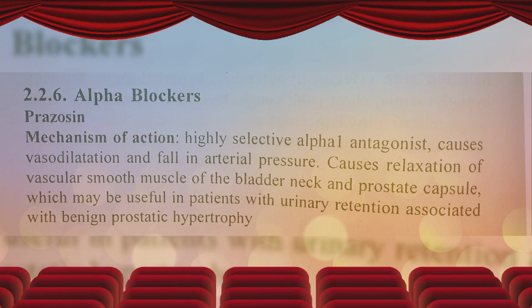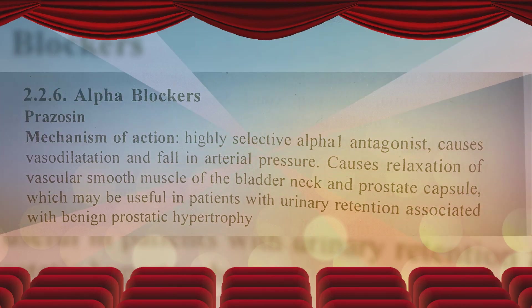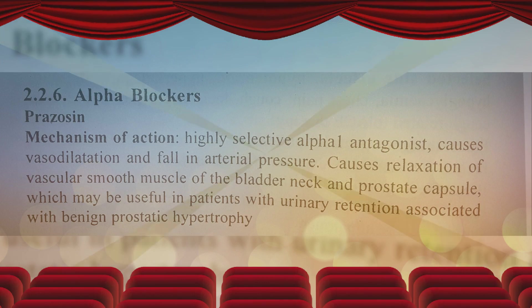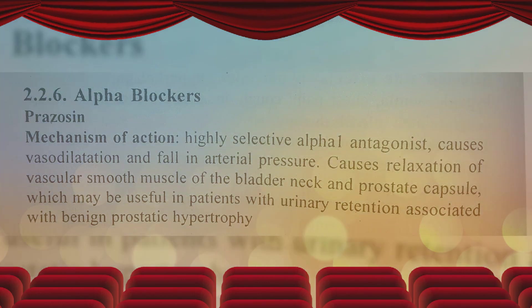In the Pharma Pass video, this is called Alpha Blockers. This is the one about how to use Alpha Blockers. These are anti-hypertensive drugs — Prazosin, Tamsulosin — and these are the same as the other A1 antagonists.